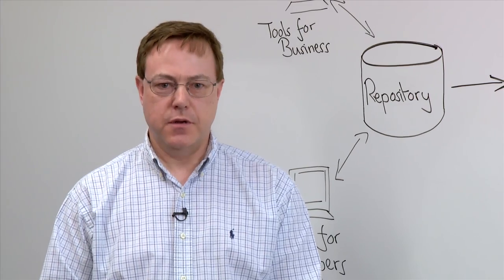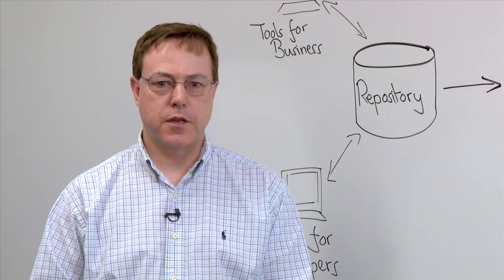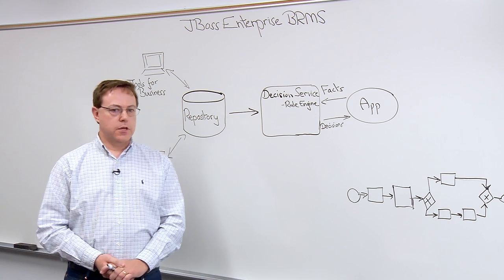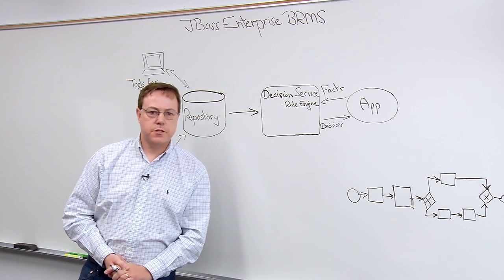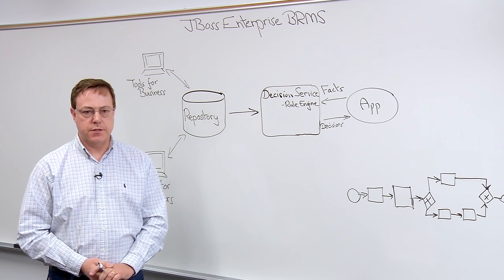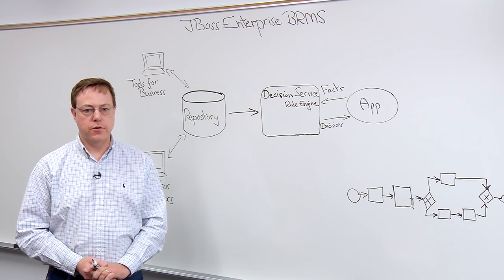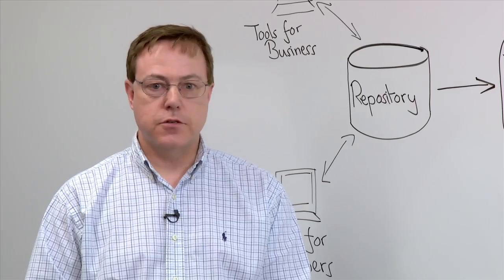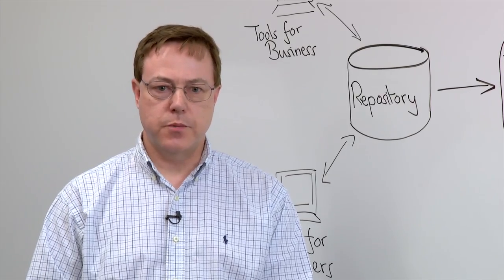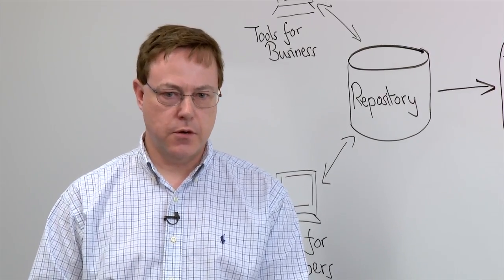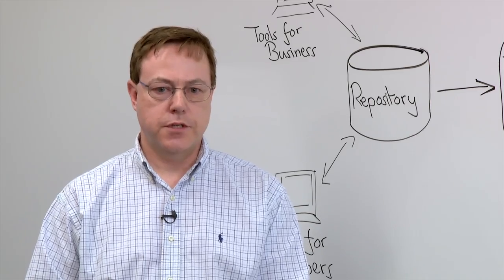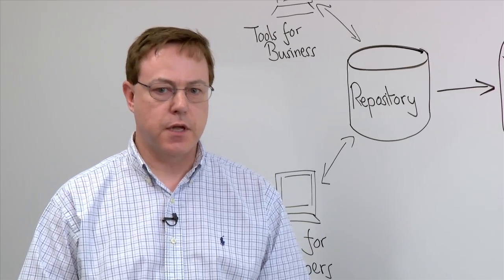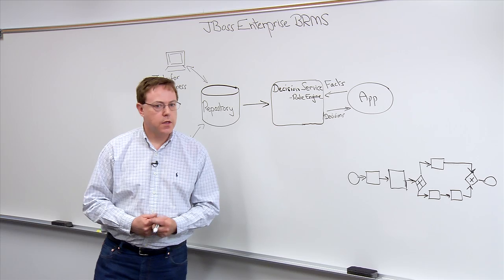Hi, I'm Phil Simpson. I'm a Product Marketing Manager here at Red Hat. JBoss Enterprise Business Rules Management System is a platform for business automation. It allows you to separate the business rules from your application code and present them in a way that the business can understand and can more easily change.